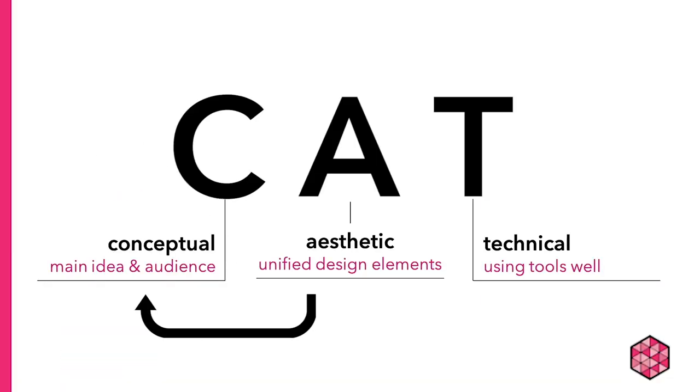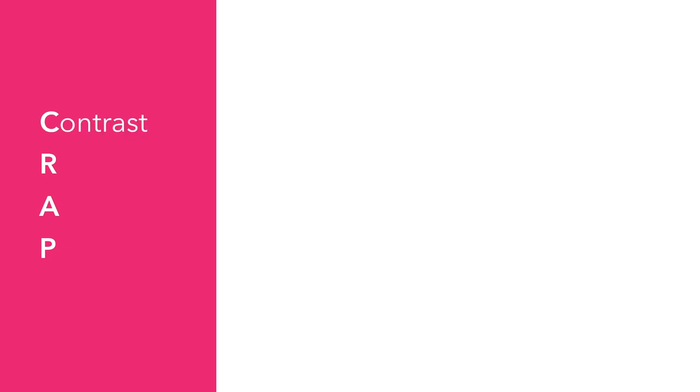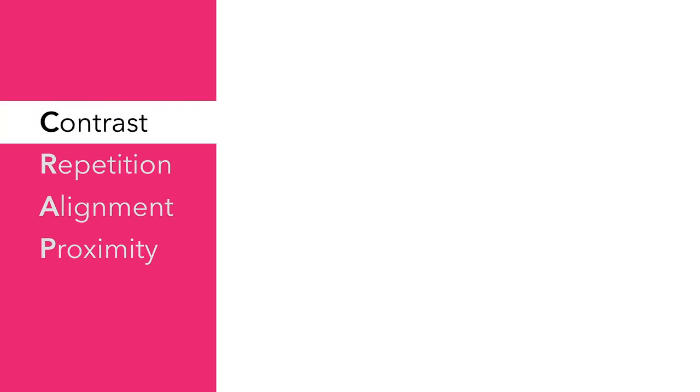Now that you know what CAT stands for, let's take a closer look at the A — or Aesthetics. At Design Lab we teach you to design CRAP. That is, we teach four principles to keep in mind whenever you're working on a digital media project. Those principles are Contrast, Repetition, Alignment, and Proximity — C-R-A-P. C is for Contrast. Contrast can be achieved through variations in size, color, line thickness, and spacing.